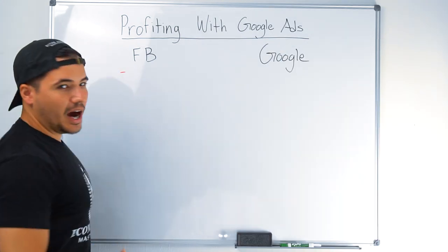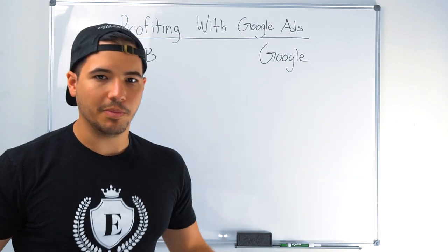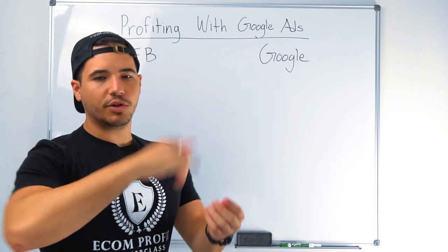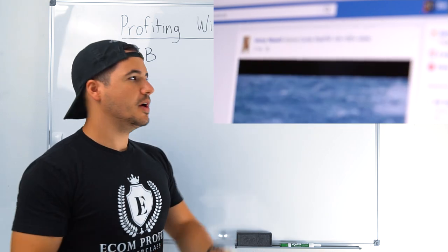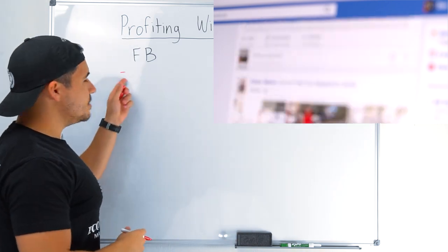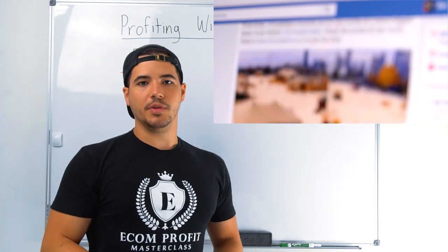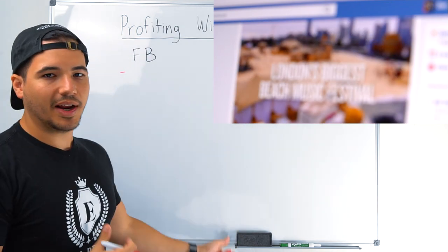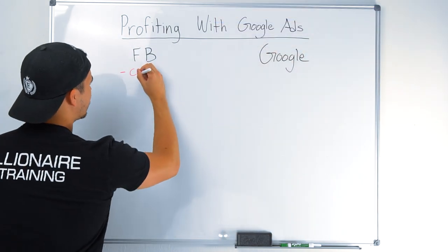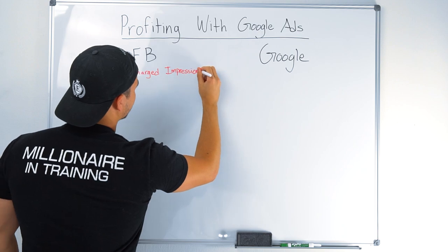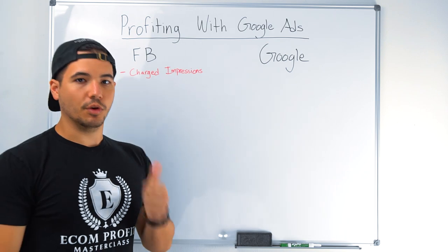Point number one is how Facebook charges you. Facebook is a social media platform — you're scrolling through your feed, you want to see what your friends and family are doing, see funny videos, whatever. When your ad automatically pops up in the feed, Facebook counts that as an impression. So Facebook charges you based on impressions — meaning if a thousand people see your ad, you are paying Facebook for those impressions.